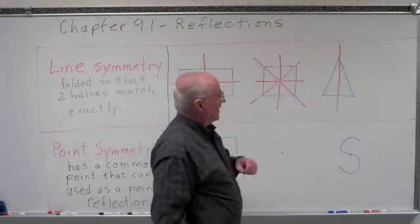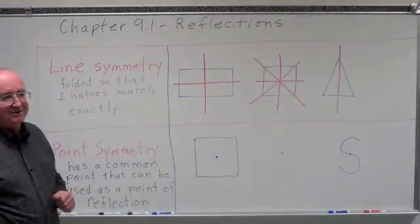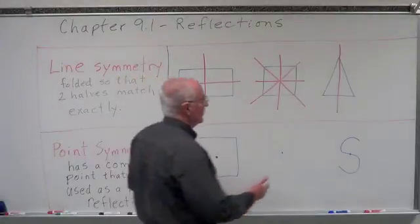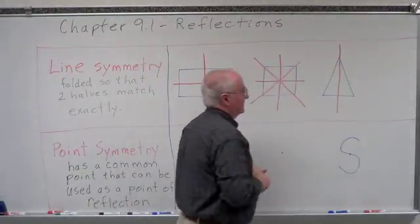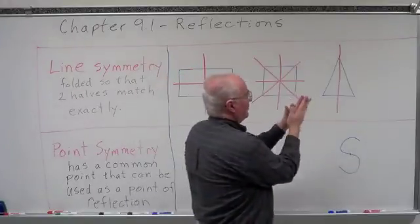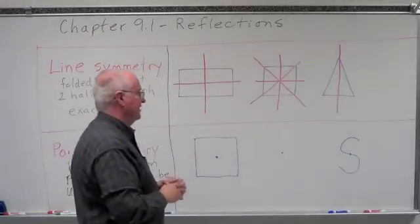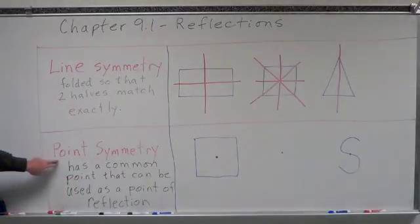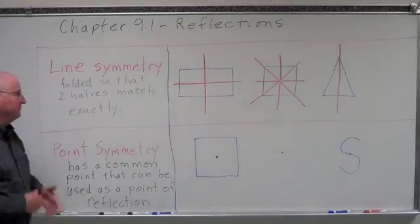An isosceles triangle has two congruent sides and one line of symmetry. We can draw a line straight down from the vertex through the center of the base, fold it onto itself, and one half equals the other side. Point symmetry is a little different — a figure has point symmetry if it has a common point that can be used as a point of reflection.